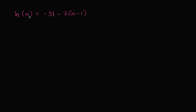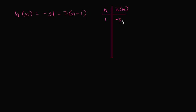I have a function h of n, and let's say that it explicitly defines the terms of a sequence. Let me make a quick table. We have n and then we have h of n. When n is equal to one, h of n is negative 31 minus seven times one minus one, which is just zero, so it's going to be negative 31.